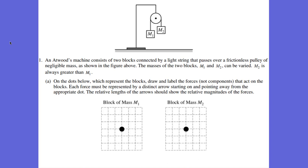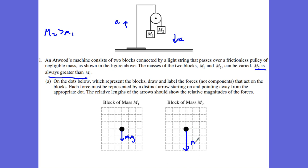An Atwood machine is when we have two masses hooked up between a pulley and one is pulling the other. In this problem, there's a key statement that M2 is always greater than M1. So M2 is going to accelerate downward and M1 is going to accelerate upward. We have M1 times gravity as the free body diagram for M1, and M2 times gravity — this force is going to be greater. The tensions are going to be the same: this tension has to be bigger in order to accelerate M1 upward, and this tension is smaller than M2G, but those tensions are equal.